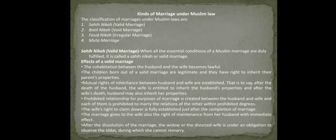The legal effects of a valid marriage are as follows: cohabitation between husband and wife becomes lawful. Children born out of a valid marriage are legitimate and have the right to inherit their parents' property. Mutual rights of inheritance between husband and wife are established — if the husband dies, the wife inherits from his property, and vice versa.